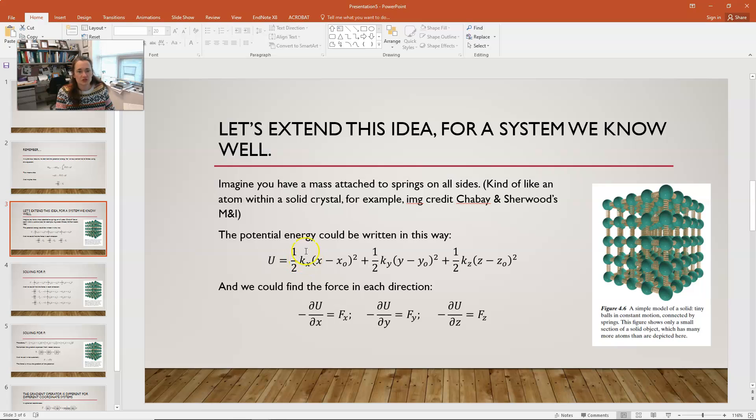The potential energy would be one-half times the x spring constant, k sub x, times x minus x naught squared, plus one-half k sub y times y minus y naught squared, plus one-half k sub z times z minus z naught squared. In other words, this is the potential energy for the spring, for each one of the springs in the x, y, and z directions, respectively.